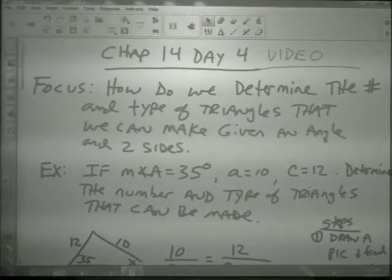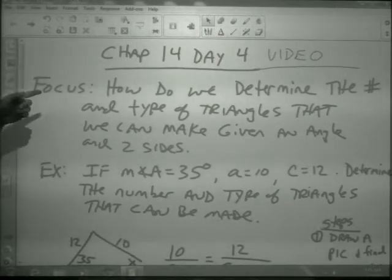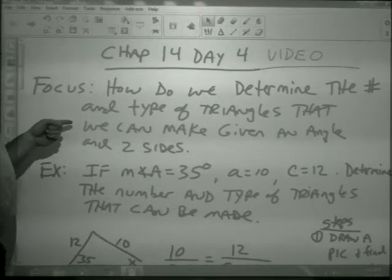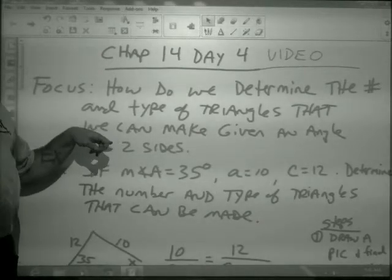Chapter 14, Day 4. Focus today: How do we determine the number and type of triangles that we can make given an angle and two sides of a triangle?